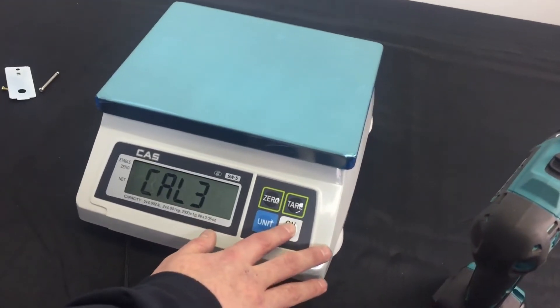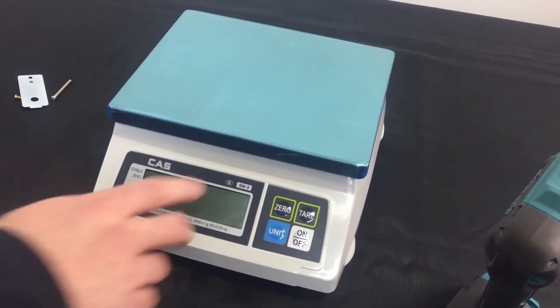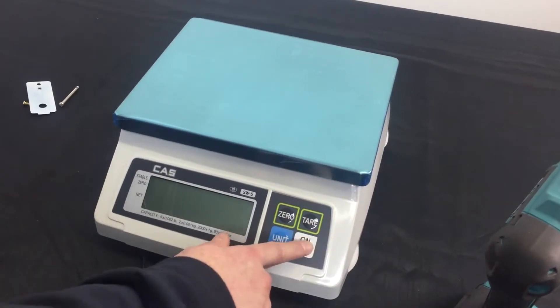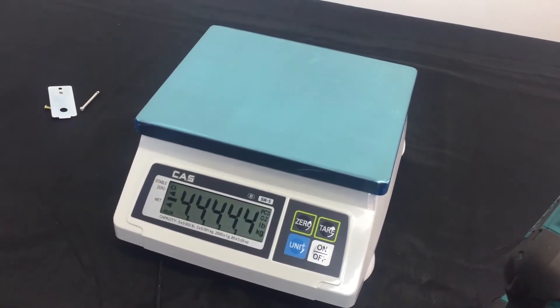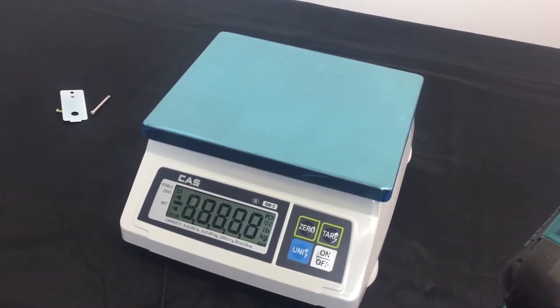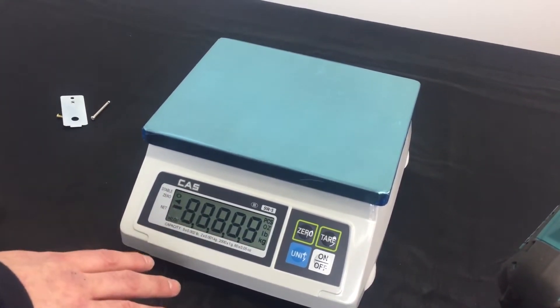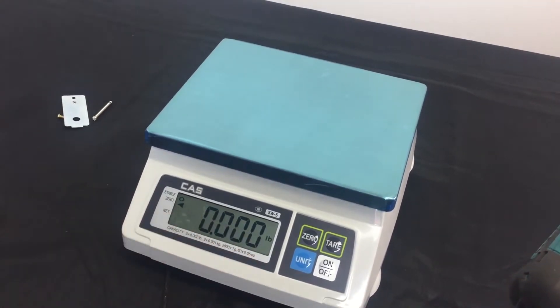Now, all you want to do is push the power key off, turn the scale off. Now, to test your weight, just turn the scale simply back on. Wait for it to count up. Once we get to stable at zero, test your weight.